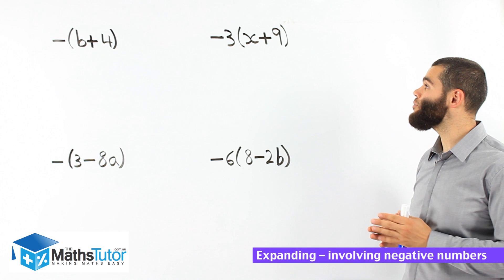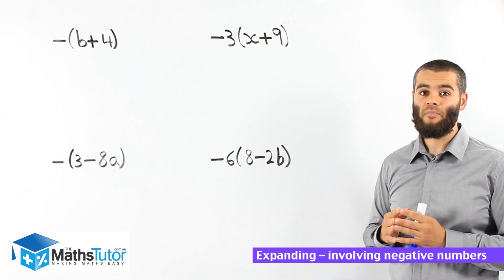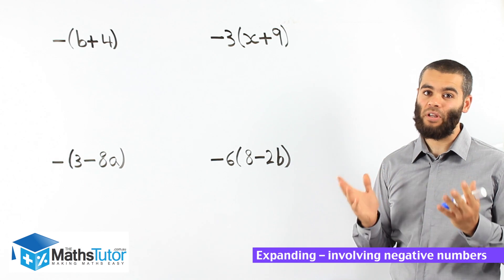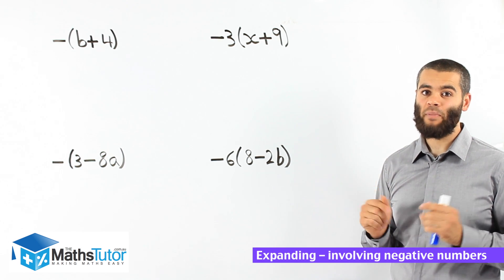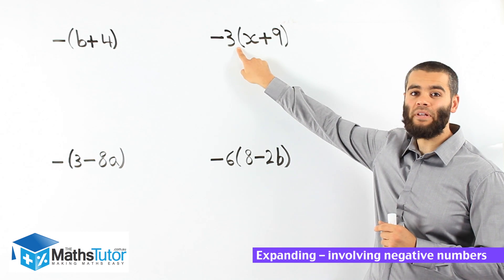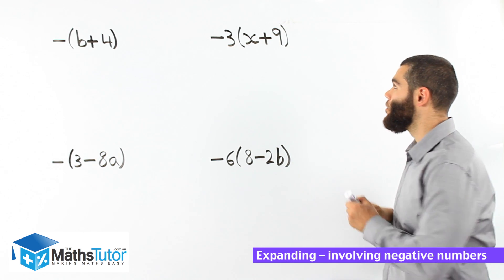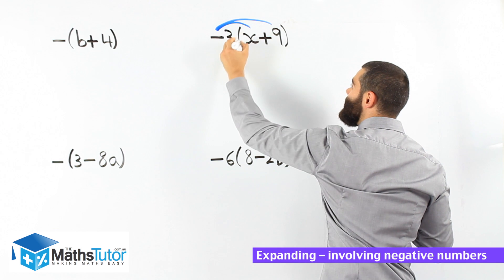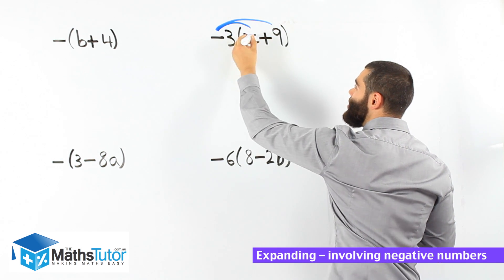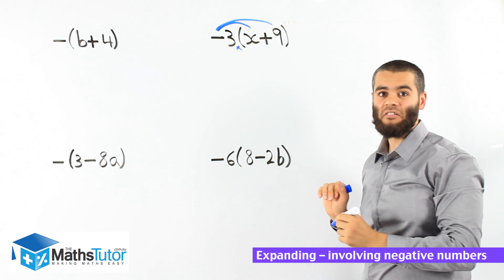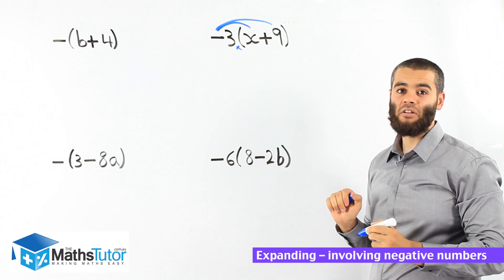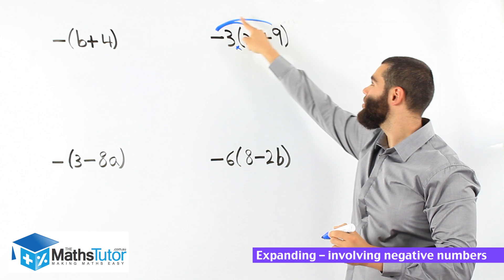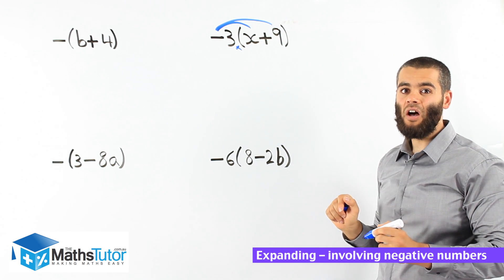The first example says minus 3, then open bracket x plus 9, close bracket. We know with expanding there is an invisible multiplication right there. So negative 3 times everything inside the bracket — negative 3 times the x, and negative 3 times the 9. We show the arrows to show that negative 3 times x, negative 3 times the positive 9.